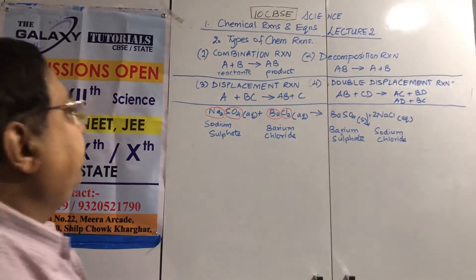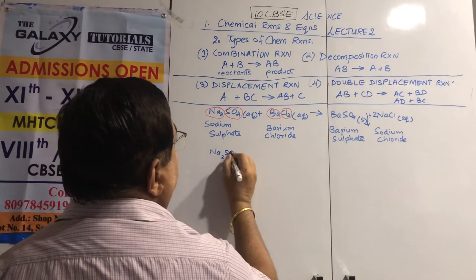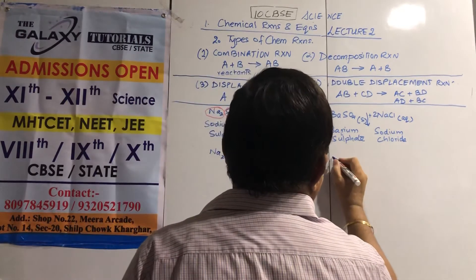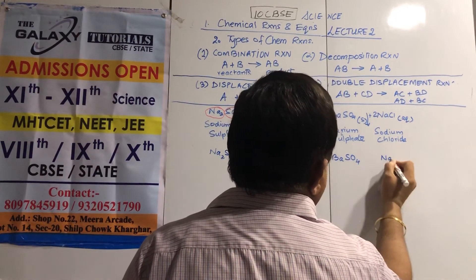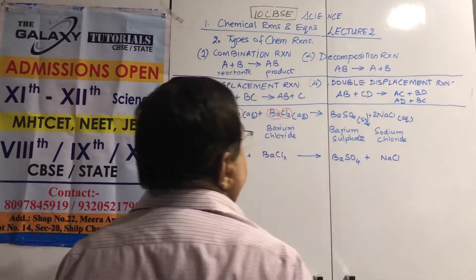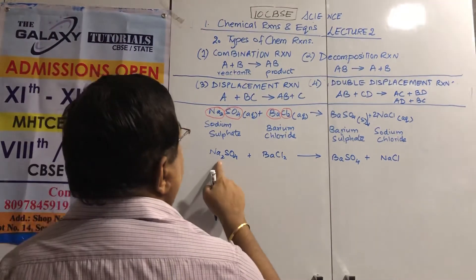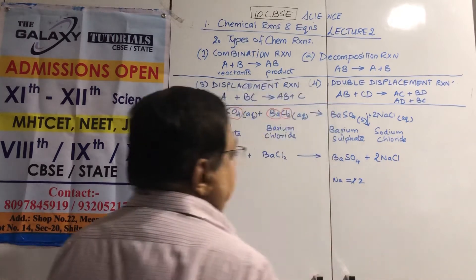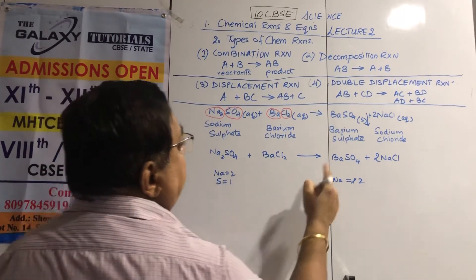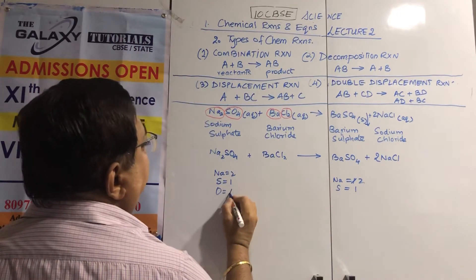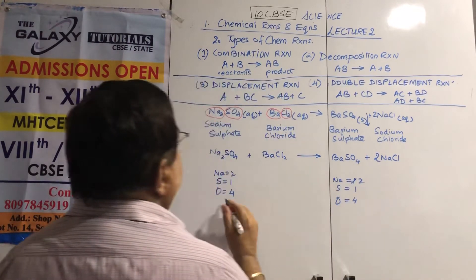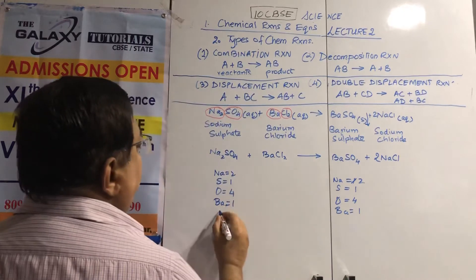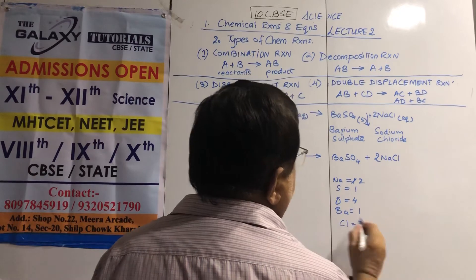To balance, know the formulas: Na2SO4 for sodium sulfate, BaCl2 for barium chloride, BaSO4 for barium sulfate, and NaCl for sodium chloride. Check: sodium is 2 on the left, 1 on the right — put a 2 before NaCl. Sulfur: 1 on both sides. Oxygen: 4 on both sides. Barium: 1 on both sides. Chlorine: 2 on both sides. Equation is balanced.